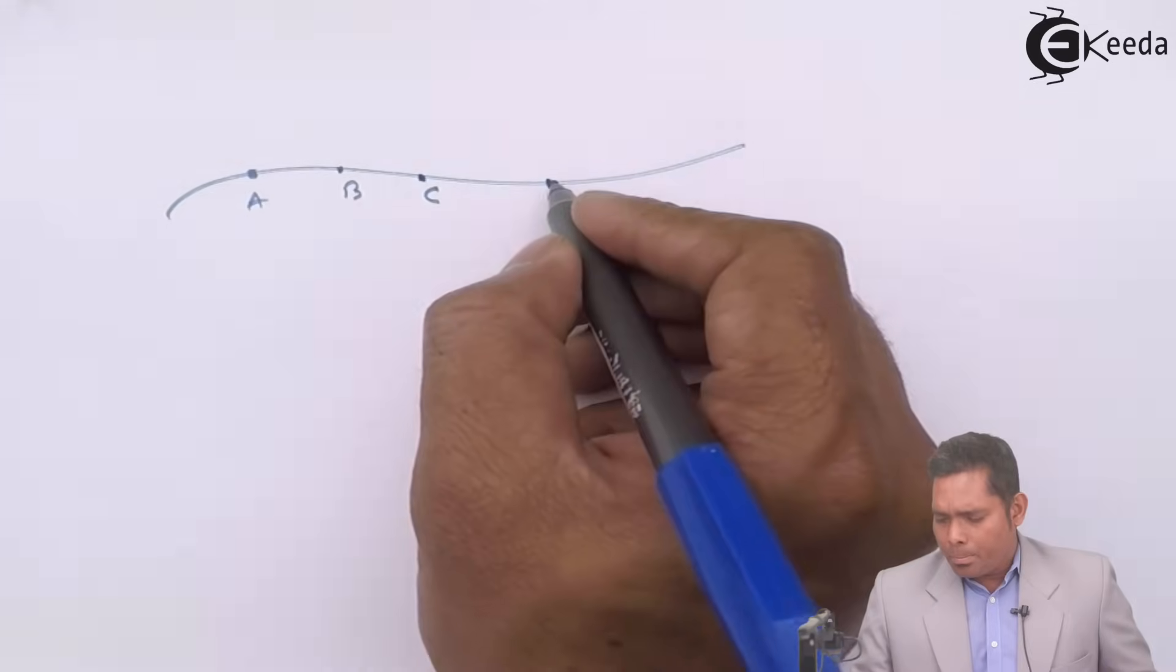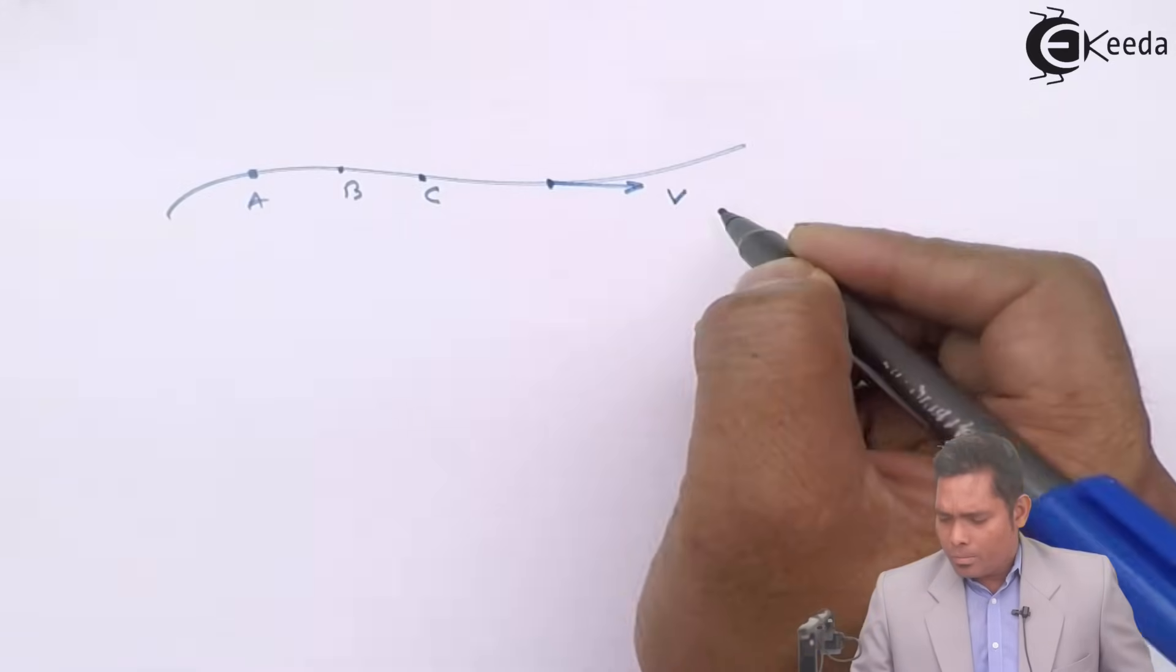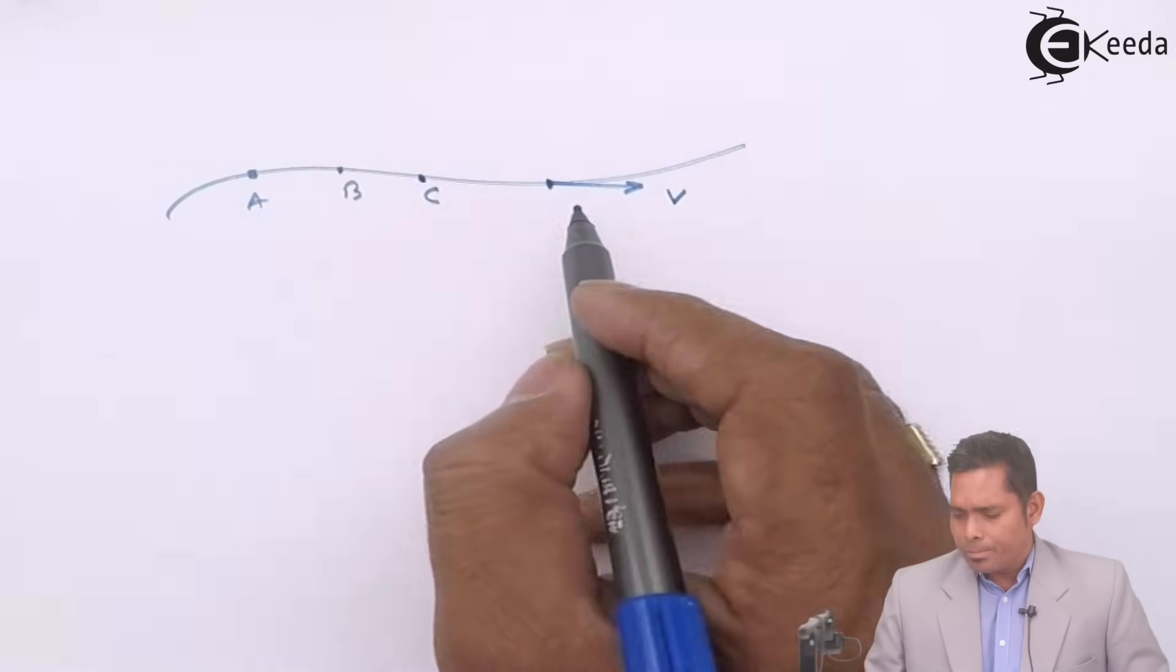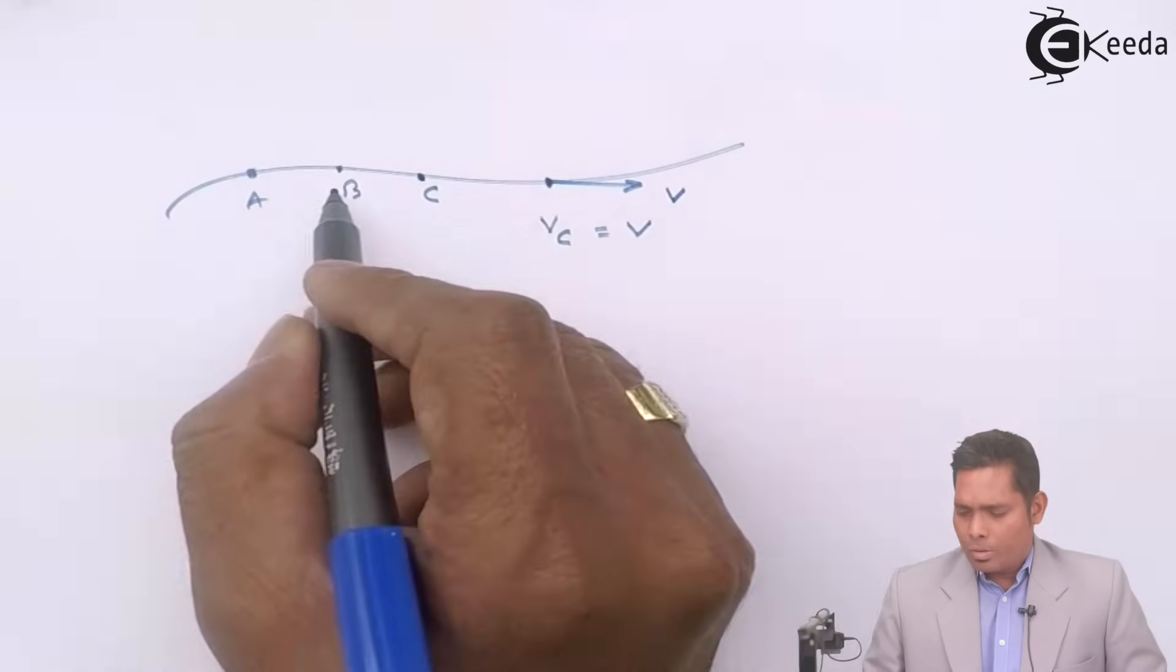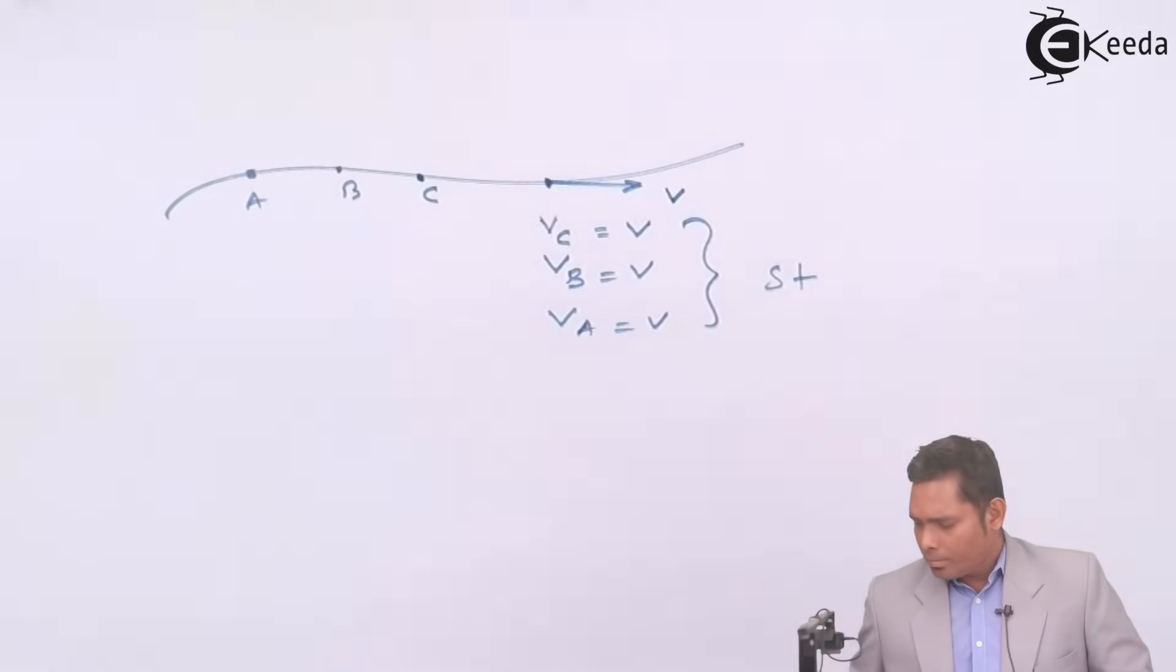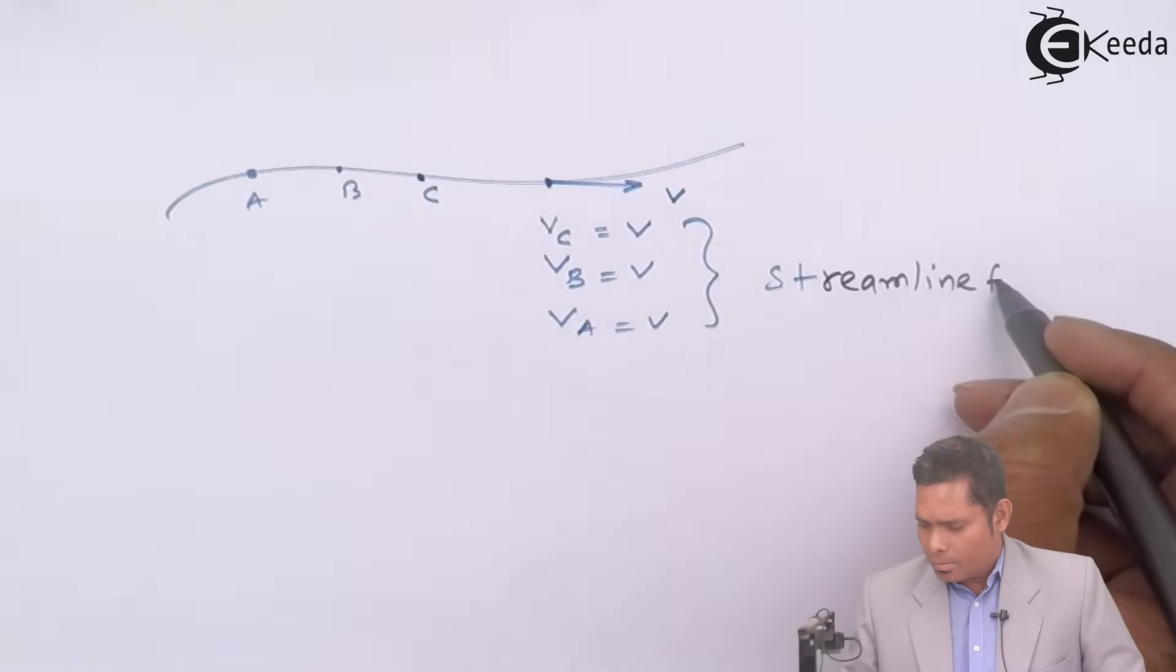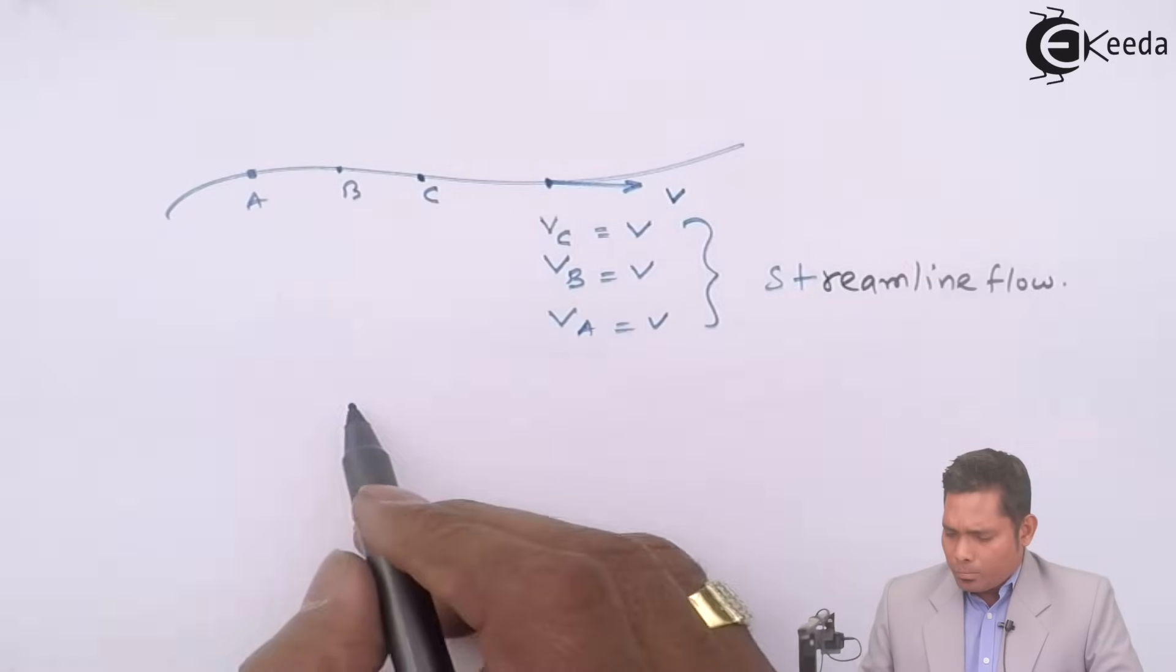In case of streamline flow, suppose the velocity at this point is v. Then all the particles when C passes through this point, its velocity of C will be v, velocity of B also will be v, velocity of A also will be v. This is in case of streamline flow.